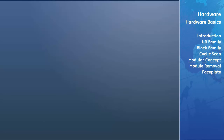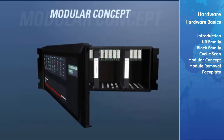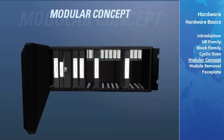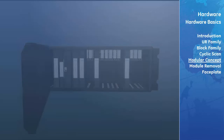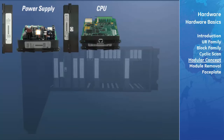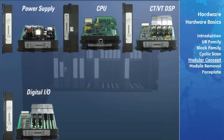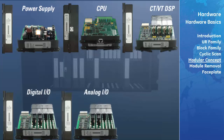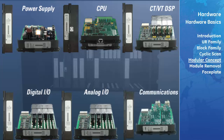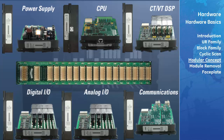The universal relay family is built on a common modular hardware platform and is configured from the following types of functional modules: power supply, CPU, CT, VT, DSP, digital I/O modules, analog transducer I/O, and inter-relay communications modules. These modules are interconnected via a high-speed data bus.